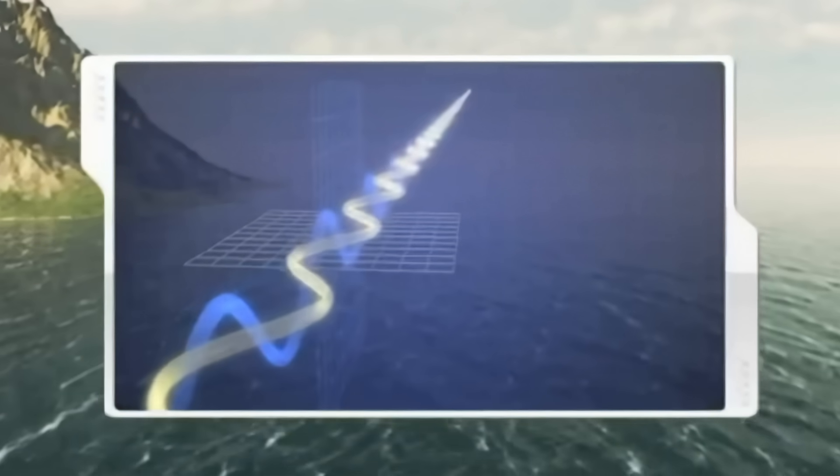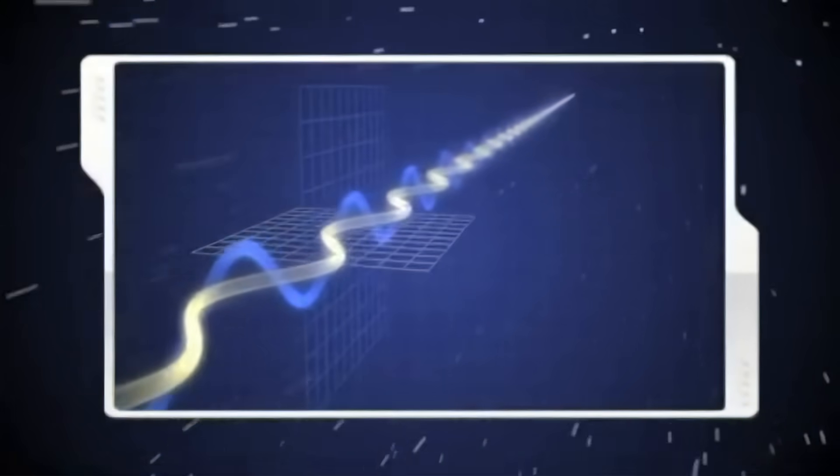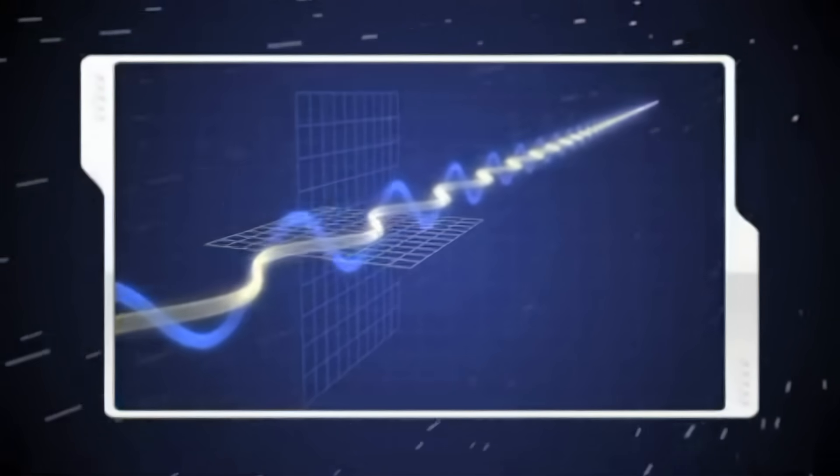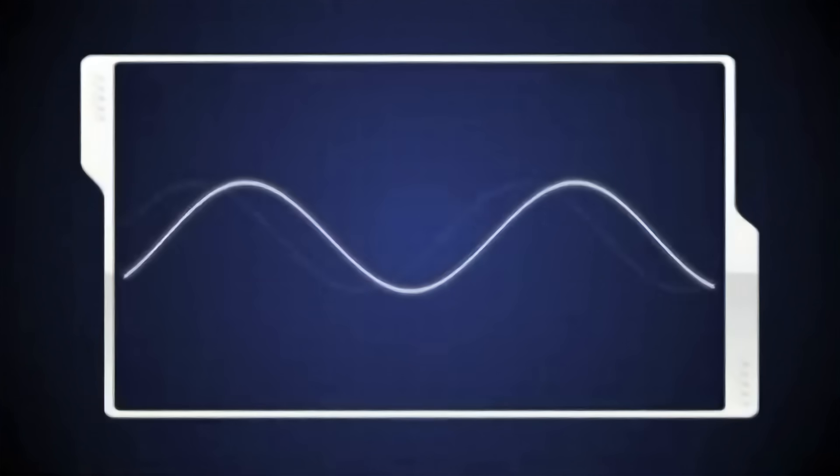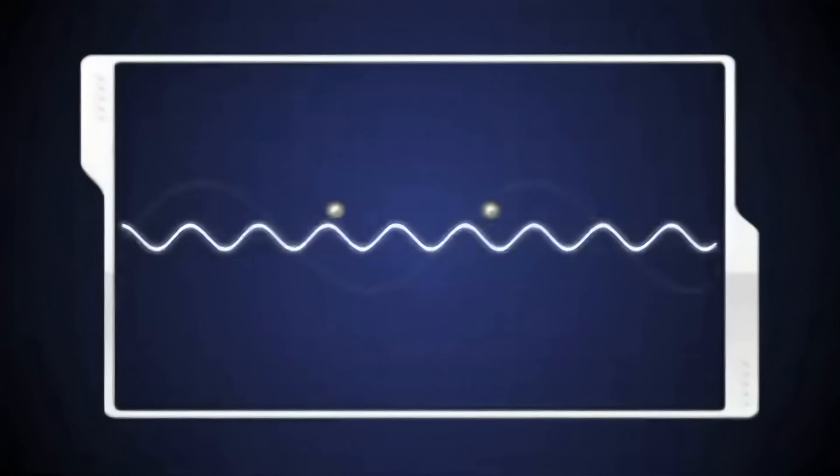EM waves travel at the constant speed of light. EM waves have crests and troughs like ocean waves. The distance between crests is the wavelength. While some EM wavelengths are very long and are measured in meters, many are tiny and are measured in billionths of a meter, nanometers.